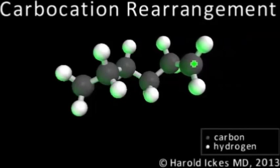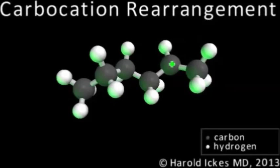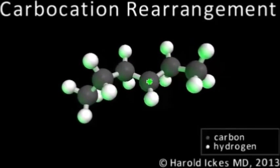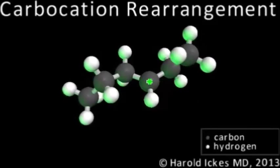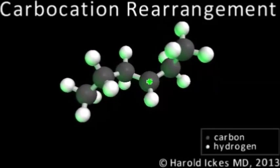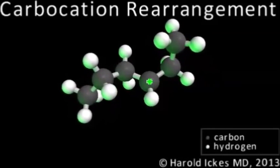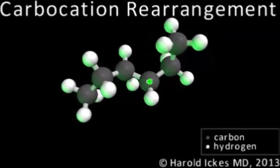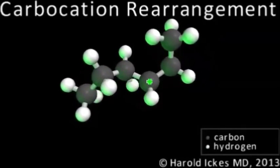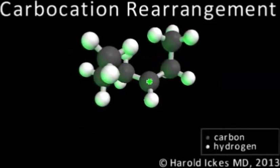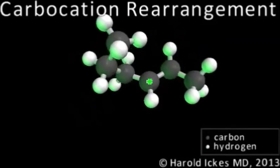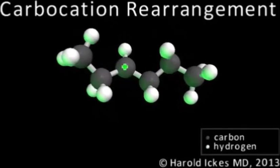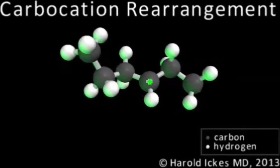Carbocation rearrangement is a central phenomenon in organic chemistry. Understanding it is critical for practically any level of organic chemistry study, no matter how basic or advanced. It may seem intimidating at first, but it is unavoidable, and without a solid knowledge of what is happening and why it happens, you may find yourself swamped in the details of a later reaction. Here we see an organic chemical rearranging.